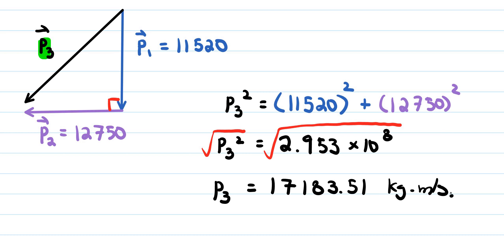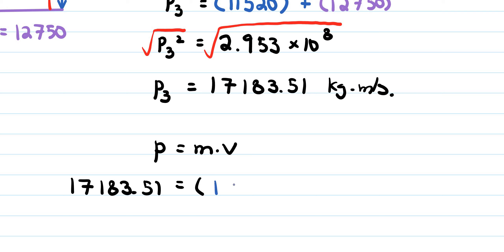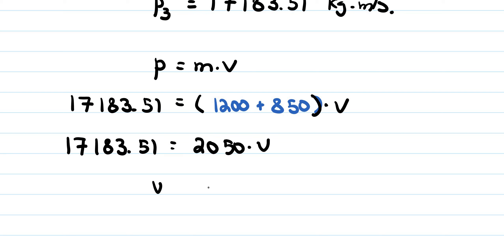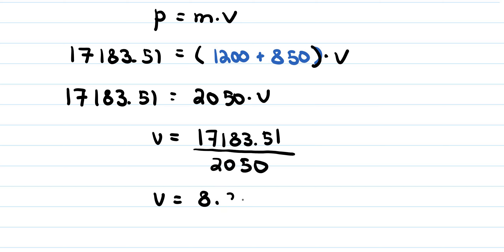Momentum equals mass times velocity, so 17,183.51 equals the combined mass times speed. The combined mass is 1200 plus 850 kilograms, which is 2050 kilograms. Speed equals 17,183.51 divided by 2050, giving a resulting speed of 8.382 meters per second.